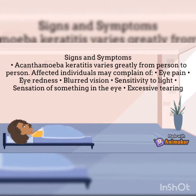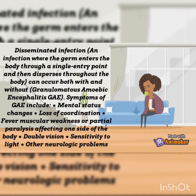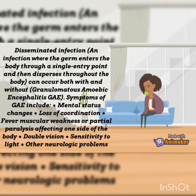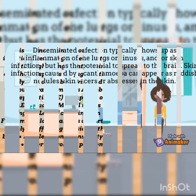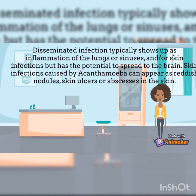Acanthamoeba keratitis varies greatly from person to person. Affected individuals may complain of eye pain, eye redness, blurred vision, sensitivity to light, sensation of something in the eye, and excessive tearing. Granulomatous amoebic encephalitis (GAE) symptoms include mental status changes, loss of coordination, fever, muscular weakness or partial paralysis affecting one side of the body, double vision, sensitivity to light, and other neurological problems. Disseminated infection typically shows up as inflammation of the lungs or sinuses and/or skin infections, with potential to spread to the brain. Skin infections can appear as reddish nodules, skin ulcers, or abscesses.